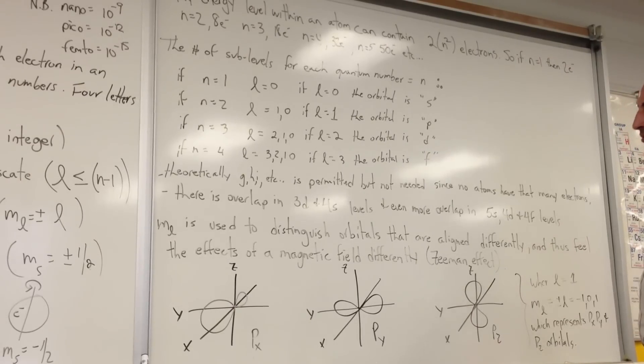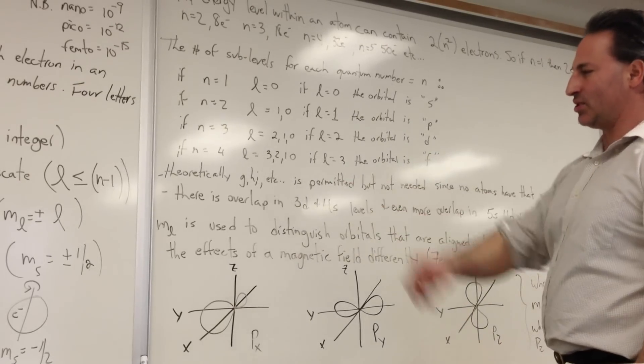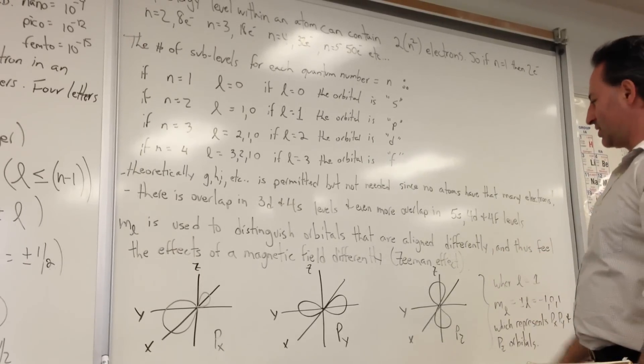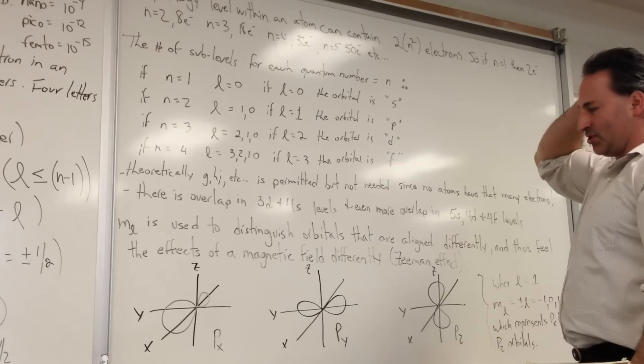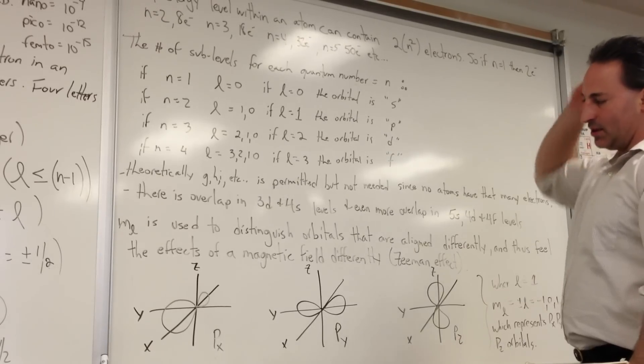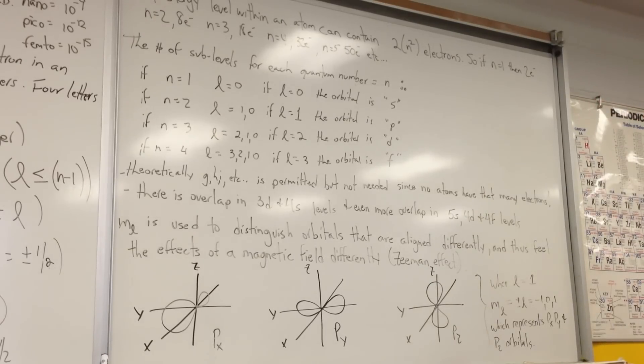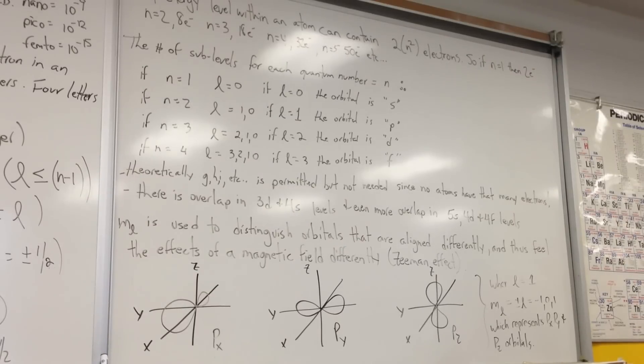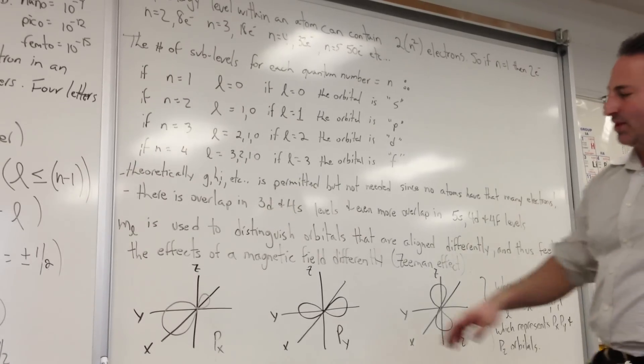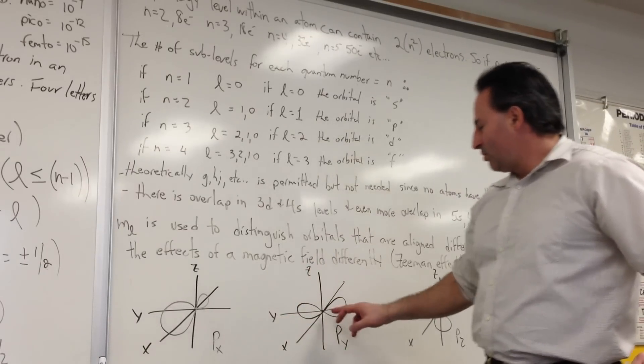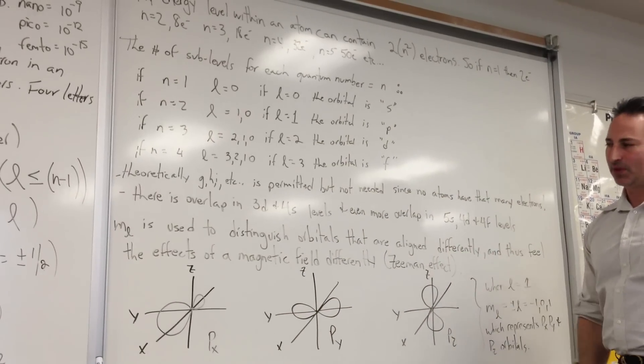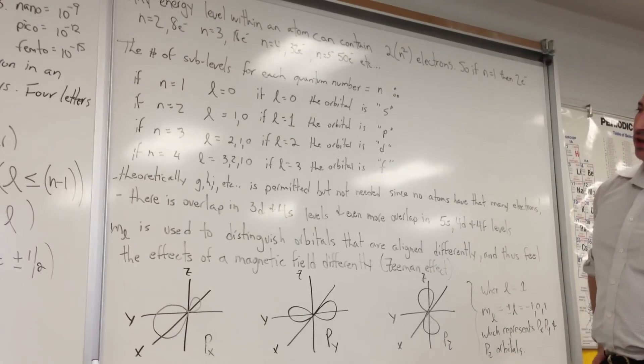M sub L is used to distinguish orbitals, as I mentioned earlier, that are aligned differently and thus feel the effects of magnetic field differently. This is called the Zeeman effect, that I mentioned earlier, where an excited gas is placed in a magnetic field, and its spectral lines split according to how the atoms sense the presence of the magnetic field. And that was explained eventually by the fact that Px, Py, and Pz orbitals are oriented on different planes in a three-dimensional coordinate plane.